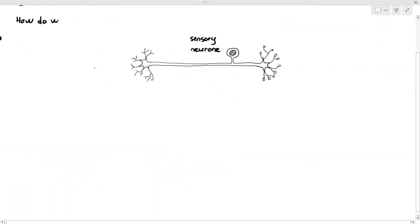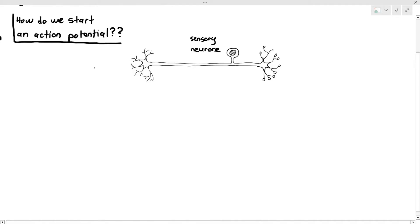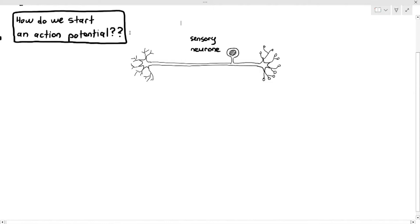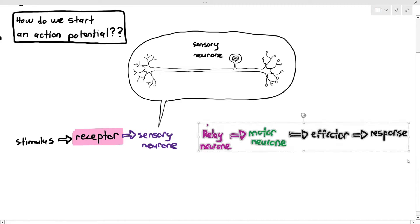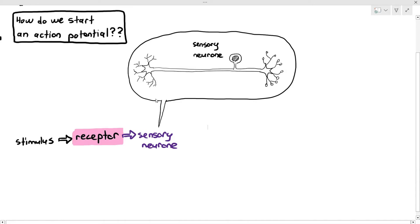So the question here is: how do we start the action potential? Before we answer that question, we also have to give some context. What does it mean to start the action potential? I'm drawing out the sensory neuron here, and I want you to see this flow that needs to happen when we want to detect a stimulus and produce a response. The stimulus must first be detected by something called a receptor, and the receptor will then send the signal to the sensory neuron.